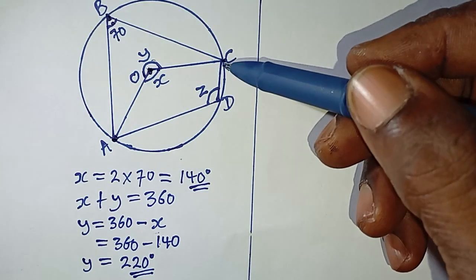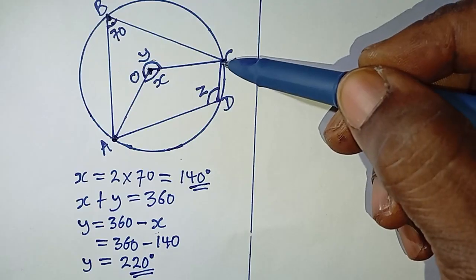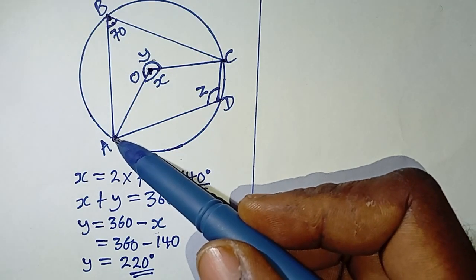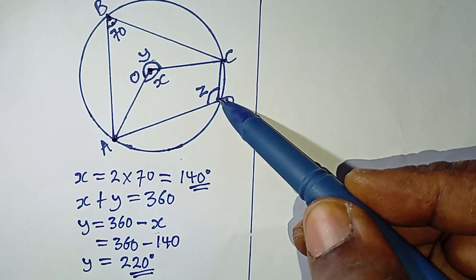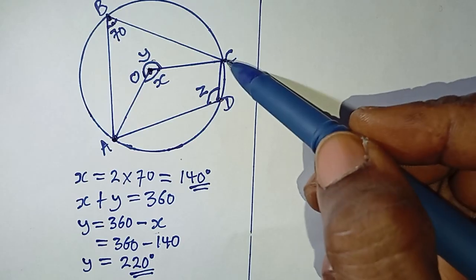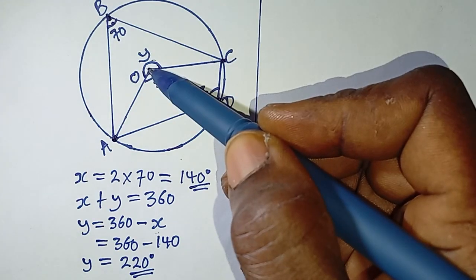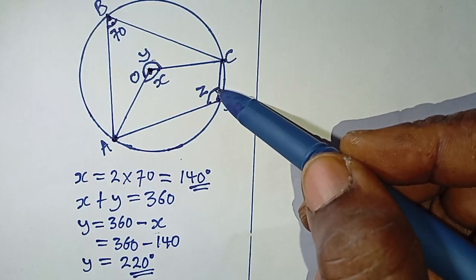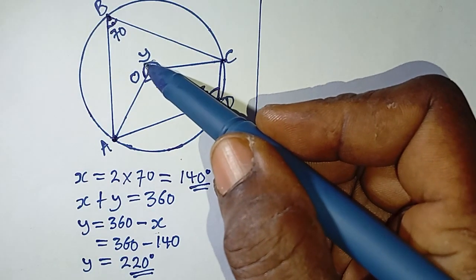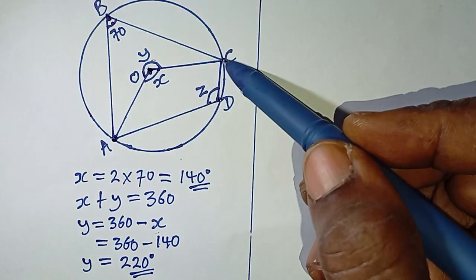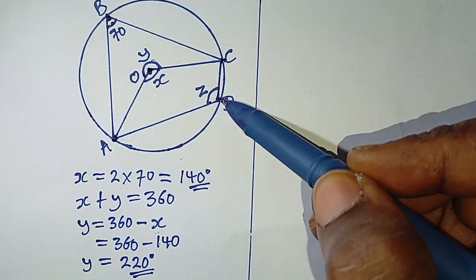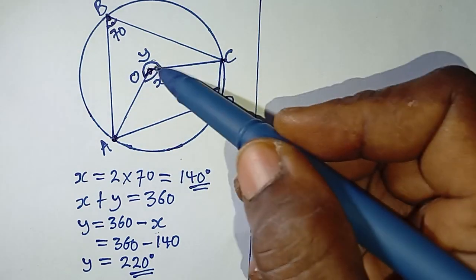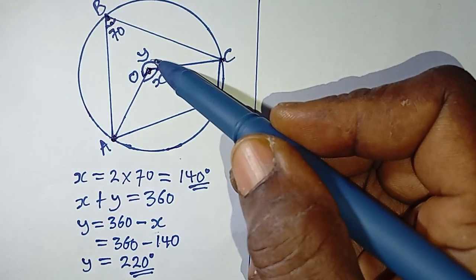For angle z, a line originates from C to D on the circumference, and another line from A to D also on the circumference, and these two lines form angle z. Similarly, another line moves from C to the center and another from A to the center. So it is clear that the angle formed at the circumference z is related to the angle formed at the center. The two pairs of lines originate from the same points A and C — one pair goes to D to form angle z at the circumference, and the other pair goes to the center.